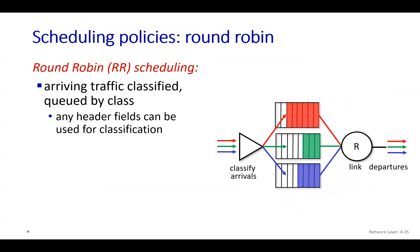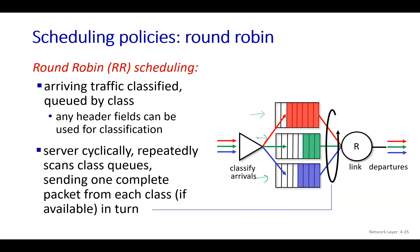In round robin scheduling, traffic is again classified based on header fields. We might have red, green, and blue packets. Processing is cyclic: one red packet, then one green packet, then one blue packet — then repeat. First red, then green, then blue, continuously.